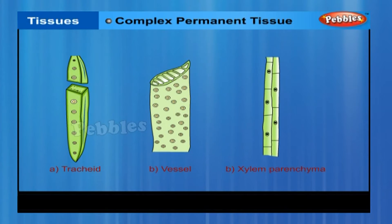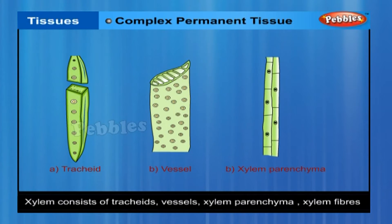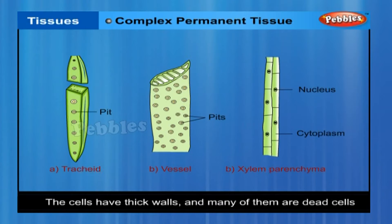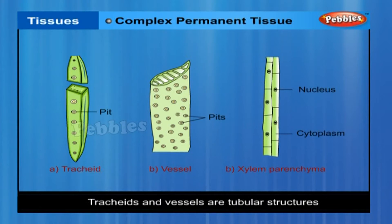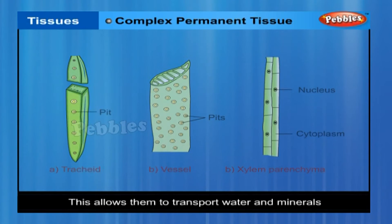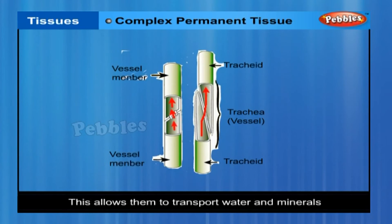Complex permanent tissue. Xylem consists of tracheids, vessels, xylem parenchyma and xylem fibres. The cells have thick walls and many of them are dead cells. Tracheids and vessels are tubular structures, which allows them to transport water and minerals.